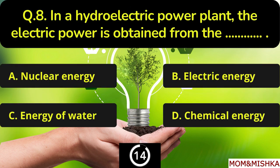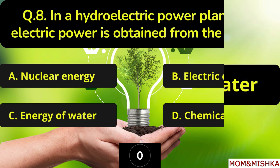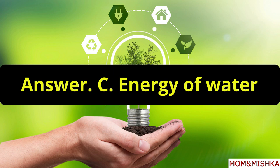In a hydroelectric power plant, the electric power is obtained from the blank. From the Energy of Water, Option C.